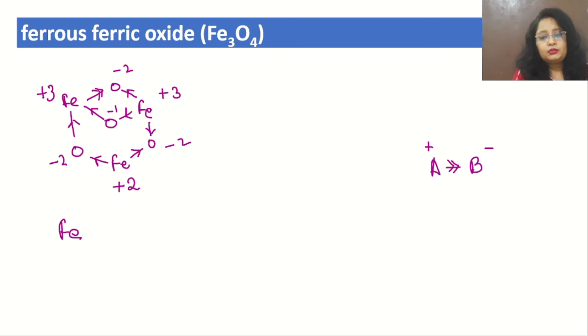So here we can say two iron are having +3 charge and one iron is having +2 charge, and this is our answer for the oxidation state of iron in Fe₃O₄.